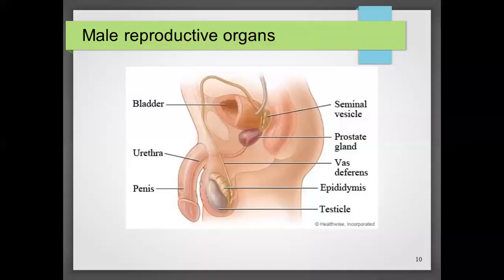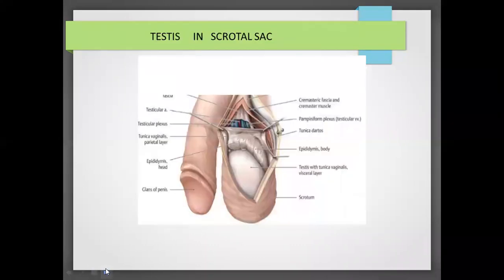Hi children, how are you all? What we have studied in last class was an overview of reproductive organs. Now we will discuss the detailed structure of male reproductive organs. The male reproductive organs consist of primary sex organs and secondary sex organs. The primary sex organ is the testes.